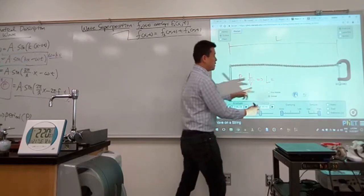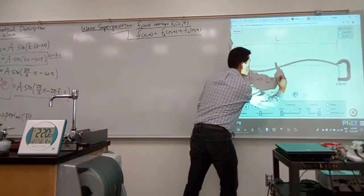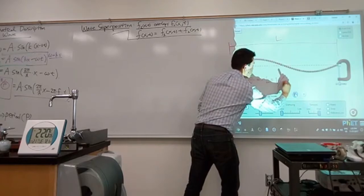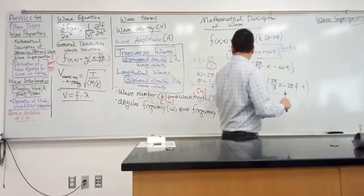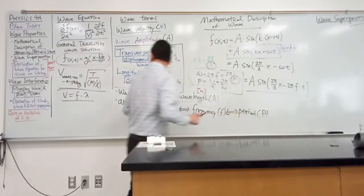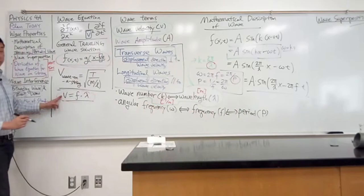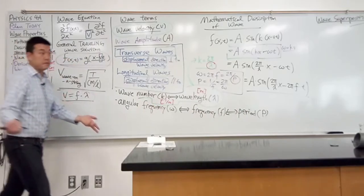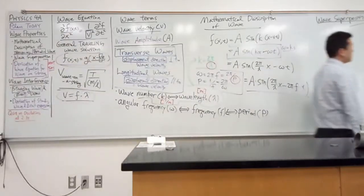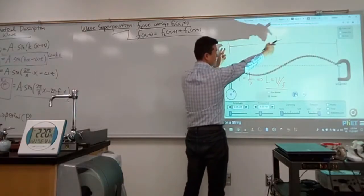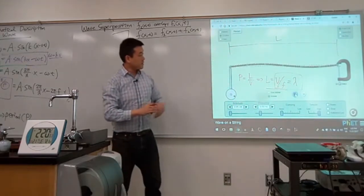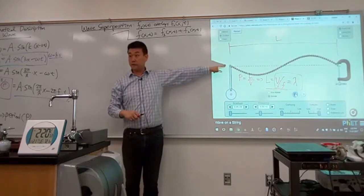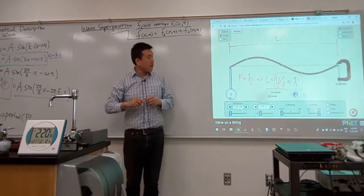So period is 1 over f. So L would be v over frequency. And looking at this expression that we are working with before, that L there is equal to the wavelength. So here, this distance L, when this distance L is equal to the wavelength lambda, then that's when you get this pattern that we call standing wave. And when you look at this wave carefully, you can intuitively see why we call this a standing wave.